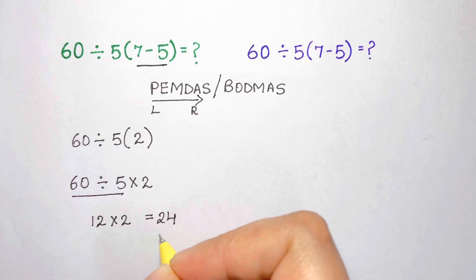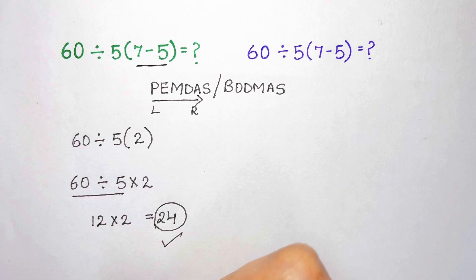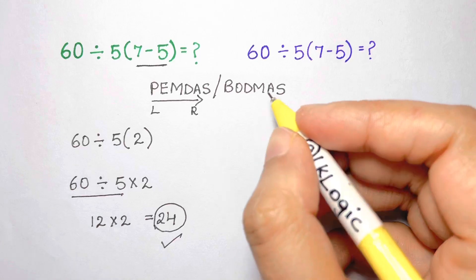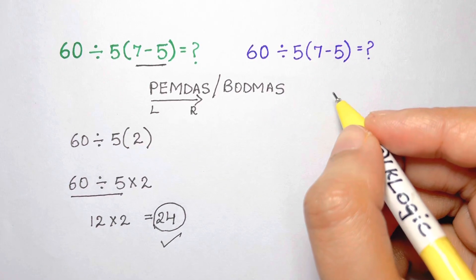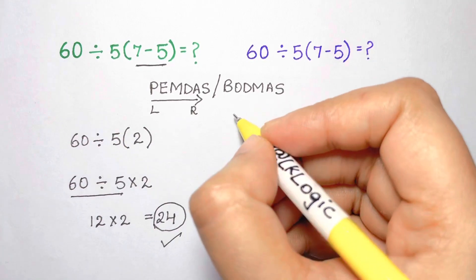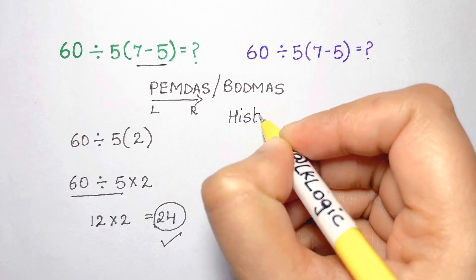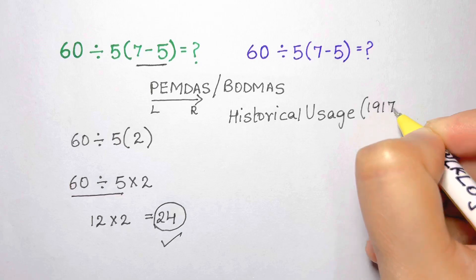This is without a doubt a correct answer according to modern interpretation of the order of operations. But let's time travel for a bit. Historically, this division symbol had a special meaning when you wrote it in the text. We'll go over this interpretation, which has a slightly different meaning in certain texts in 1917 or before.